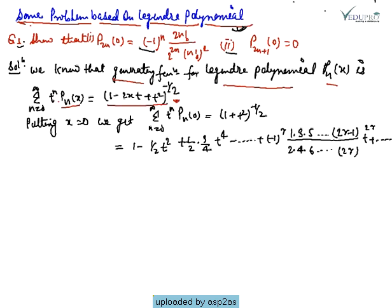Now if we put x=0 in the generating function, we get summation from N=0 to infinity of T^n * P_n(0) equals (1 + T²)^(-1/2), since the 2xT term vanishes when x=0.